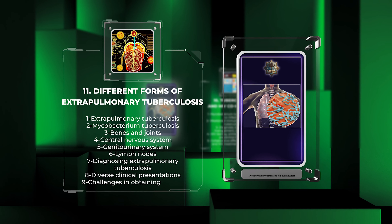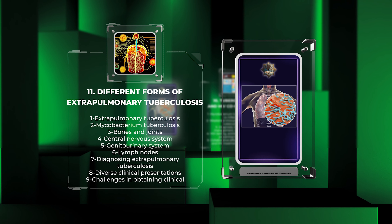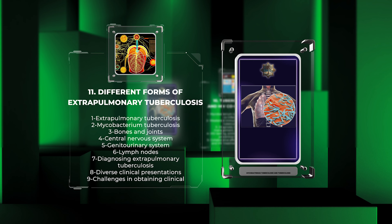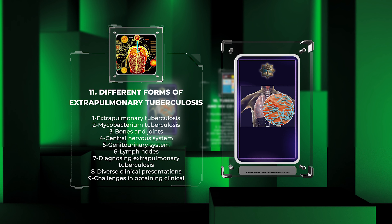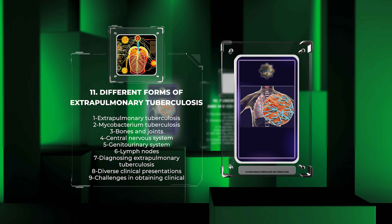In this section, we will discuss the different forms of extrapulmonary tuberculosis. Mycobacterium tuberculosis, the causative agent of tuberculosis, can affect various organs and tissues outside the lungs. Common sites of extrapulmonary tuberculosis include the bones and joints, central nervous system, genitourinary system, and lymph nodes. Diagnosing extrapulmonary tuberculosis can be difficult due to the diverse clinical presentations and challenges in obtaining appropriate clinical specimens for testing. It is important to be aware of these manifestations to ensure prompt diagnosis and proper management.